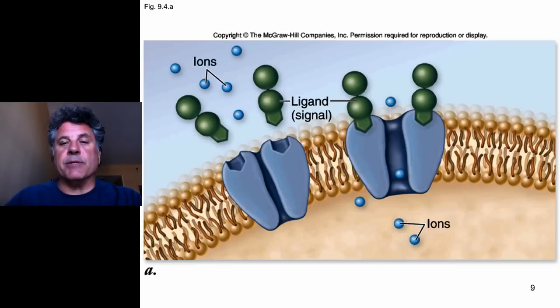Certain receptors are indeed ion channels — when they receive a signal, they change their conformation so as to form a pore through which ions can flow. I'll show you one example of an ion channel: a potassium channel, which we'll examine in detail in the next segment of this lecture.